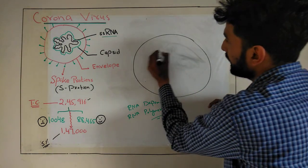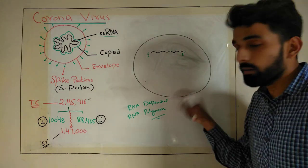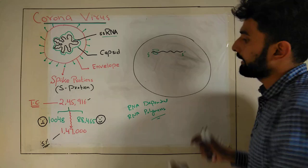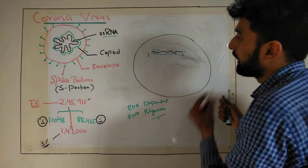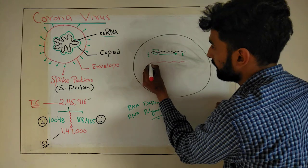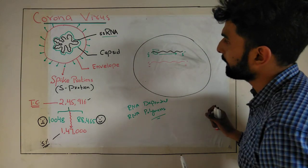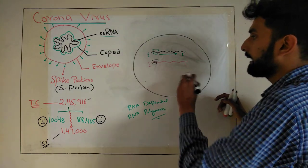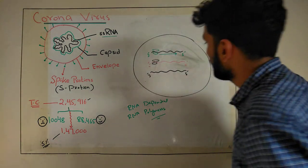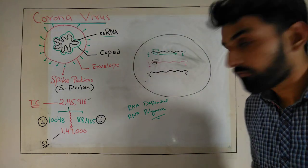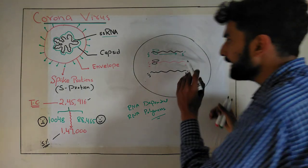the viral RNA will be attacked by this enzyme. The RNA-dependent RNA polymerase will move in the 3' to 5' prime direction, and the new RNA from 5' to 3' prime direction will be produced. Again, this RNA-dependent RNA polymerase will attach and another RNA will be formed in the 3' to 5' prime direction. In this way, a large number of copies of RNA will be formed.